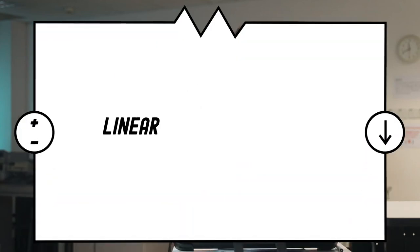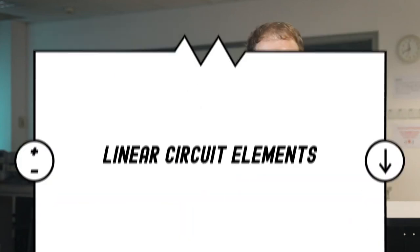In this video, we're going to talk about linear circuit elements. We've discussed some of these circuit elements already, and one of them is the voltage source, one of them is the current source, and another is a resistor. So these are all examples of linear circuit elements.